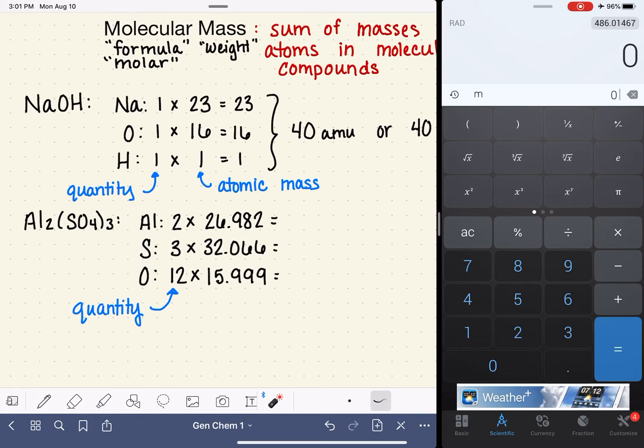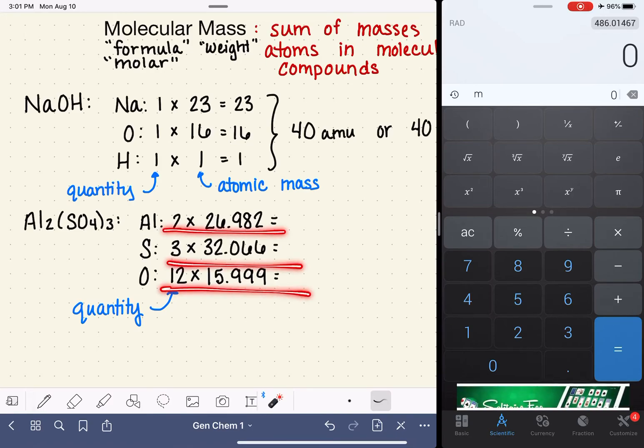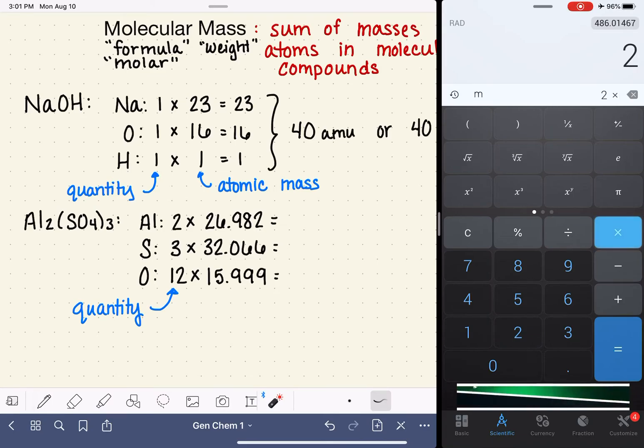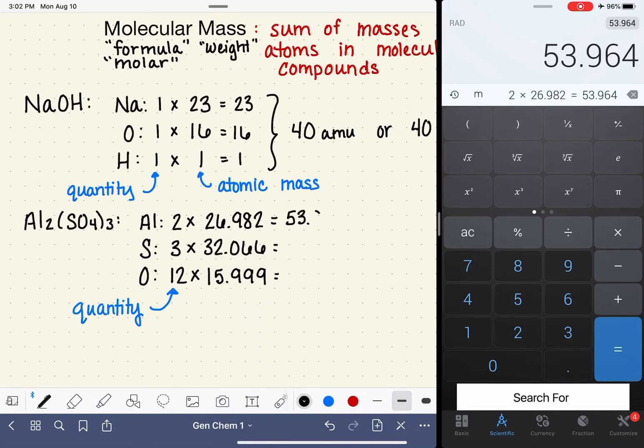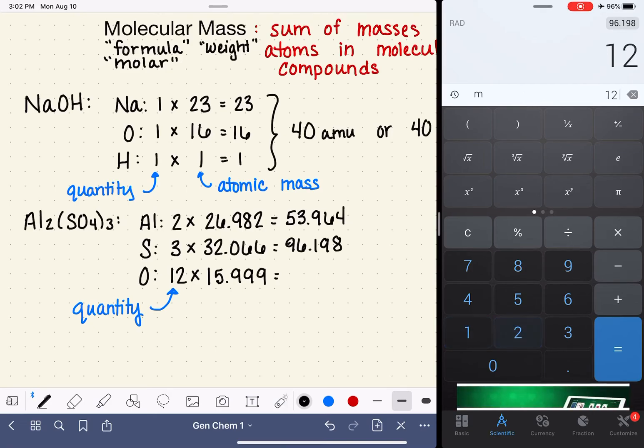We're going to start just by simply working out each one of these three. We have 2 times 26.982, and that is 53.964. We have 3 times 32.066, 96.198. And then 12 times 15.999 is 191.988.